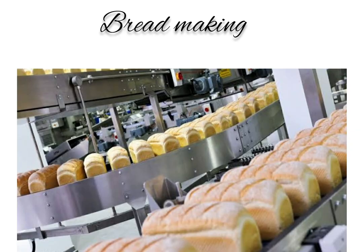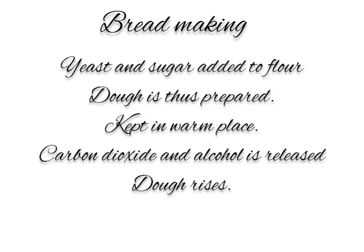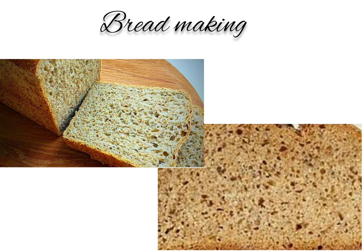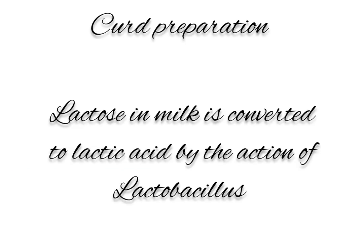How is bread made? Baking of bread involves yeast and sugar. Yeast and sugar are mixed with flour to make the dough, which is kept in a warm place. The yeast acts on the sugar in the dough, releasing carbon dioxide and alcohol. The dough rises because of the carbon dioxide. When bread is baked, the carbon dioxide and alcohol escape from the loaf, making the bread porous and fluffy.